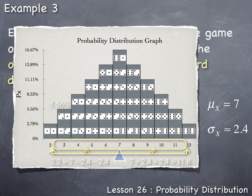There's a 5.56% chance of rolling a three, 8.33% for four, 11.11% for five, 13.89% for six, 16.67% for seven, 13.89% for eight, 11.11% for nine, 8.33% for ten, and 5.56% for eleven. Each of these probabilities will be part of the answer we seek.